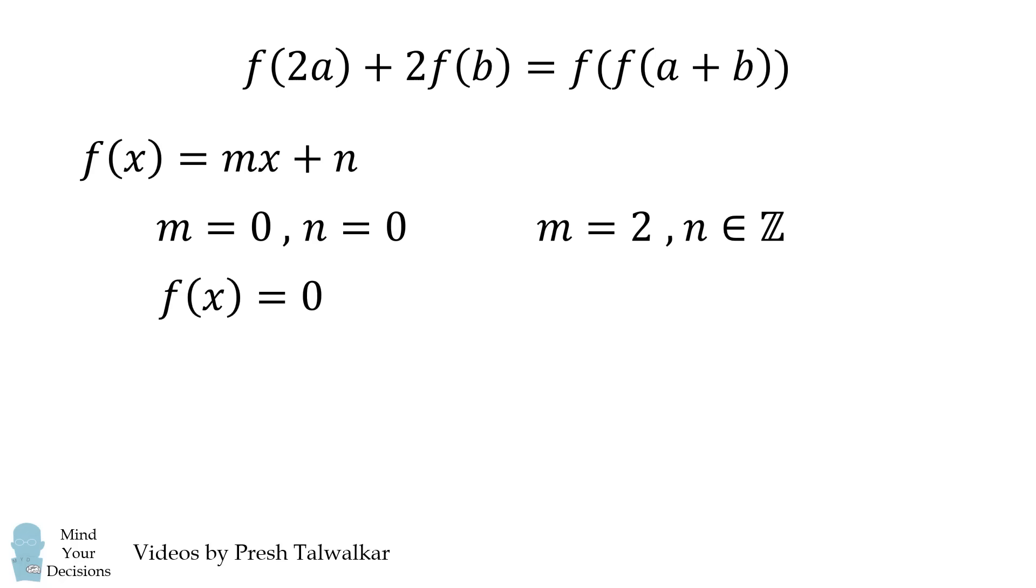One will be F of X is equal to 0. And the other is that F of X is equal to 2 times X plus N for some integer N in Z.